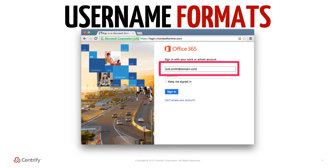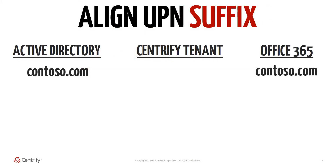The UPN looks like an email address, and in environments where Office 365 is federated for single sign-on, it is actually strongly recommended by both Microsoft and Centrify to have the UPN match the user's email address. These two attributes in turn also need to match the registered domain that was added to Office 365 in the previous video. Once the suffixes of the AD UPN and the AD email address match the Office 365 domain, this suffix needs to be registered in the Centrify Cloud Manager as a login suffix.